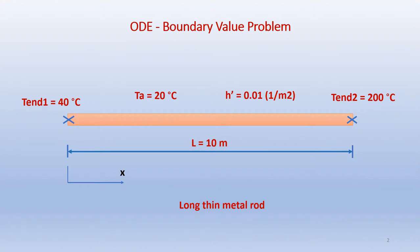Let's consider a long thin metal rod which is 10 meters long. One end of the rod is maintained at 40 degrees Celsius and the other end is maintained at 200 degrees Celsius. The ambient temperature is given as 20 degrees Celsius and the heat transfer coefficient H dash is equal to 0.01 per meter squared. Our interest is to find the temperature profile in the rod.